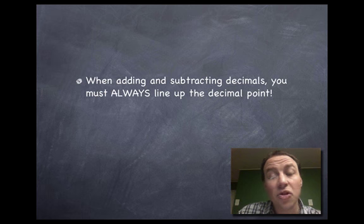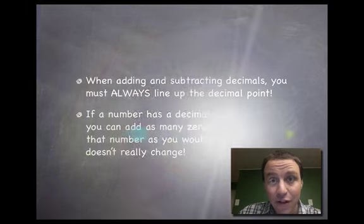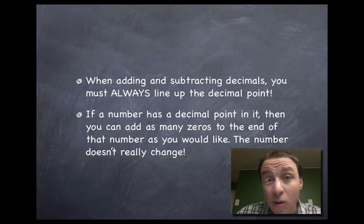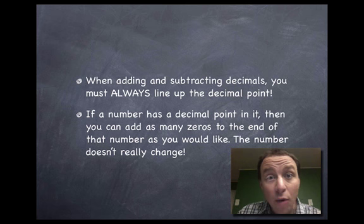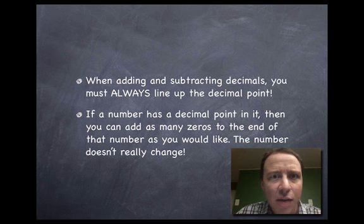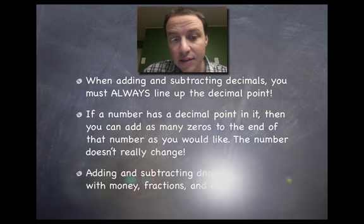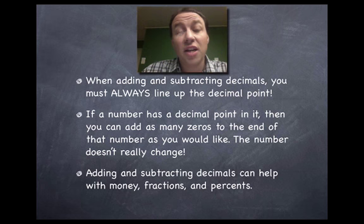What did we learn? When adding and subtracting decimals, you have to line up the decimal point. Yeah, have to. Okay. If you don't, your whole number is going to be wrong. If there's a decimal point in a number, you can add zeros to the end of it. As many as you'd like, whatever makes the problem easier to do. So if you have some place values at the end with nothing hovering above them or below them, add some zeros to the end of any number that has a decimal point in it. Okay. And adding and subtracting decimals can help you with money, can help you with fractions, can help you with percents.